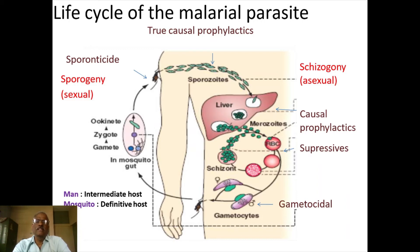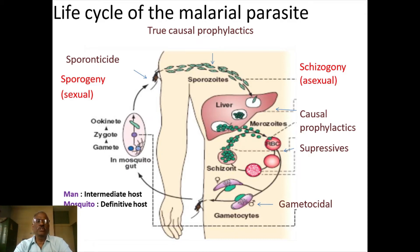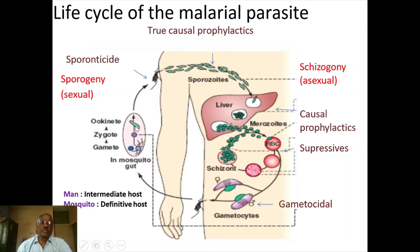During the erythrocytic stage, there is release from RBCs and sexual differentiation occurs, producing microgametocytes and macrogametocytes. This is the asexual stage. Then there is a sexual stage where micro gametes and macro gametes are formed. On a subsequent mosquito bite, the gametocytes are sucked by the mosquitoes. In the mosquito's gut, there is fertilization and production of gametes. The gametes are converted into a zygote, then into an ookinete. These ookinetes accumulate in the salivary glands of the female Anopheles mosquitoes. This is the life cycle of the malarial parasite.